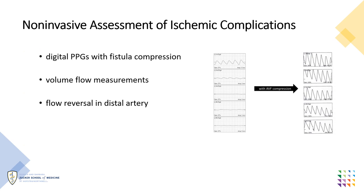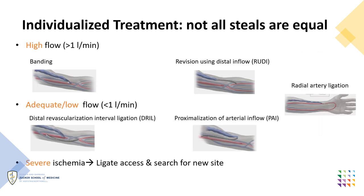The workup of access-induced hand ischemia should include PPGs with and without fistula compression, as well as fistula duplex to measure volume flow and evaluate for the presence of flow reversal in the artery distal to the anastomosis. The first step in choosing the appropriate treatment is measuring the flow in the fistula.